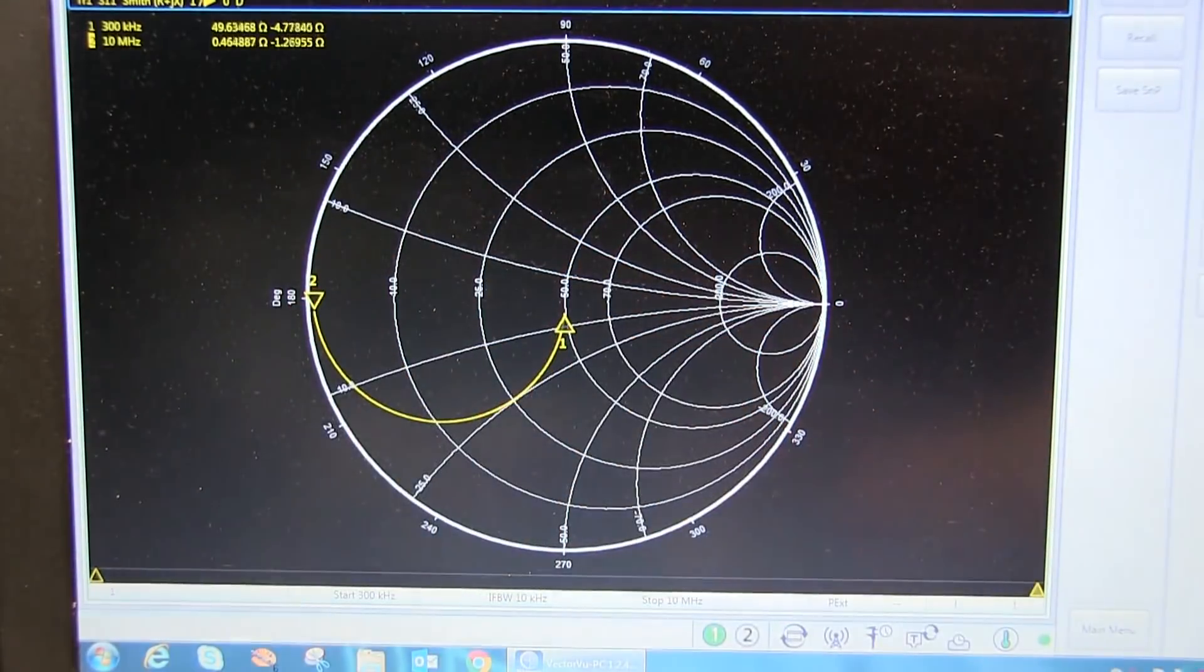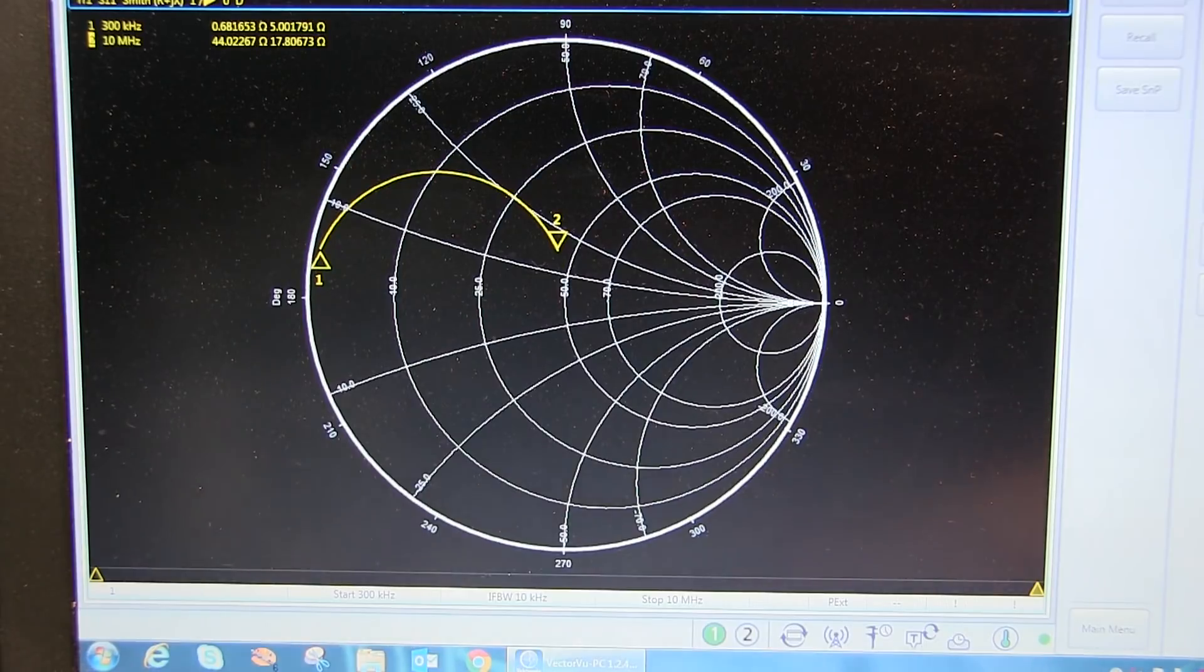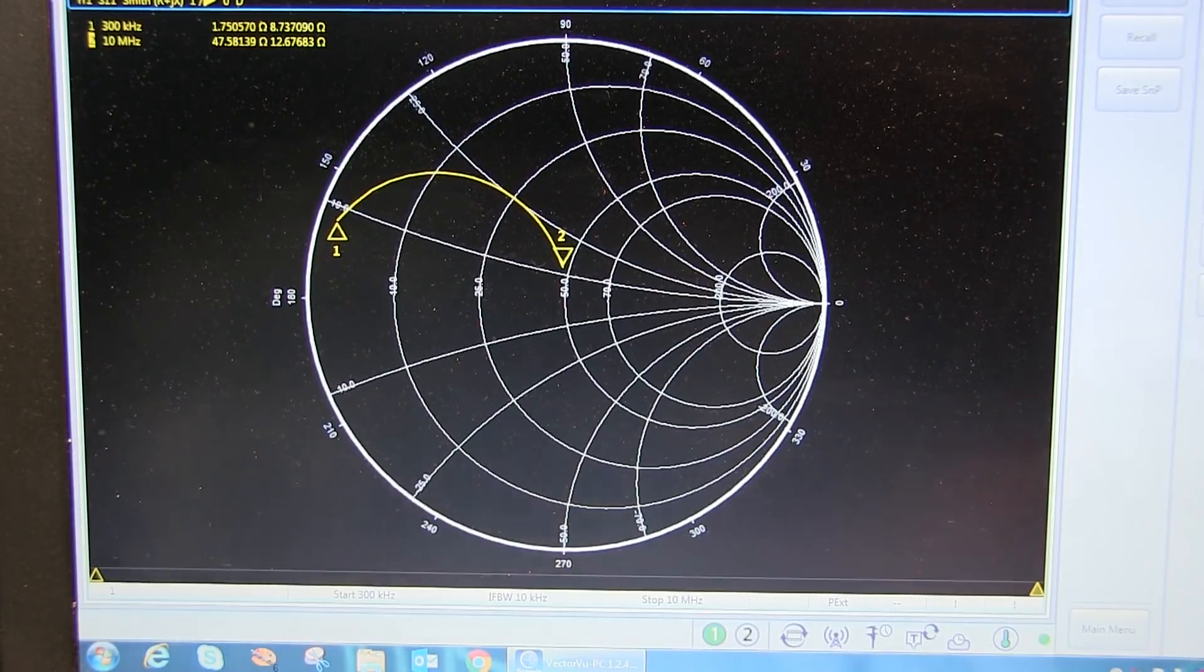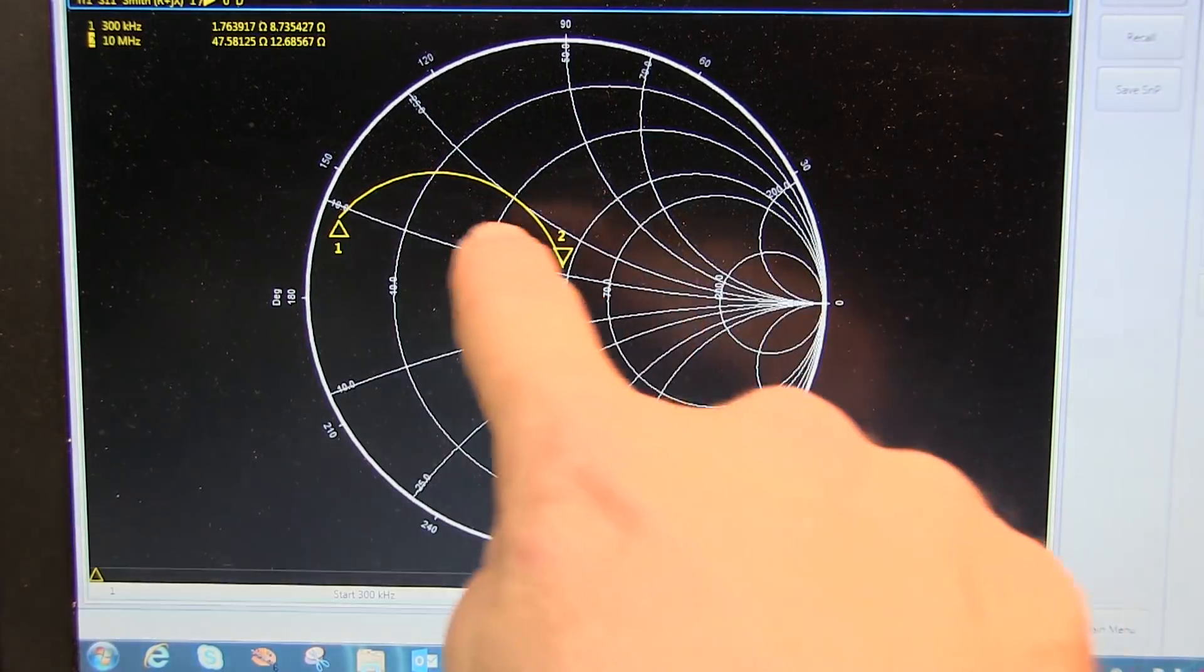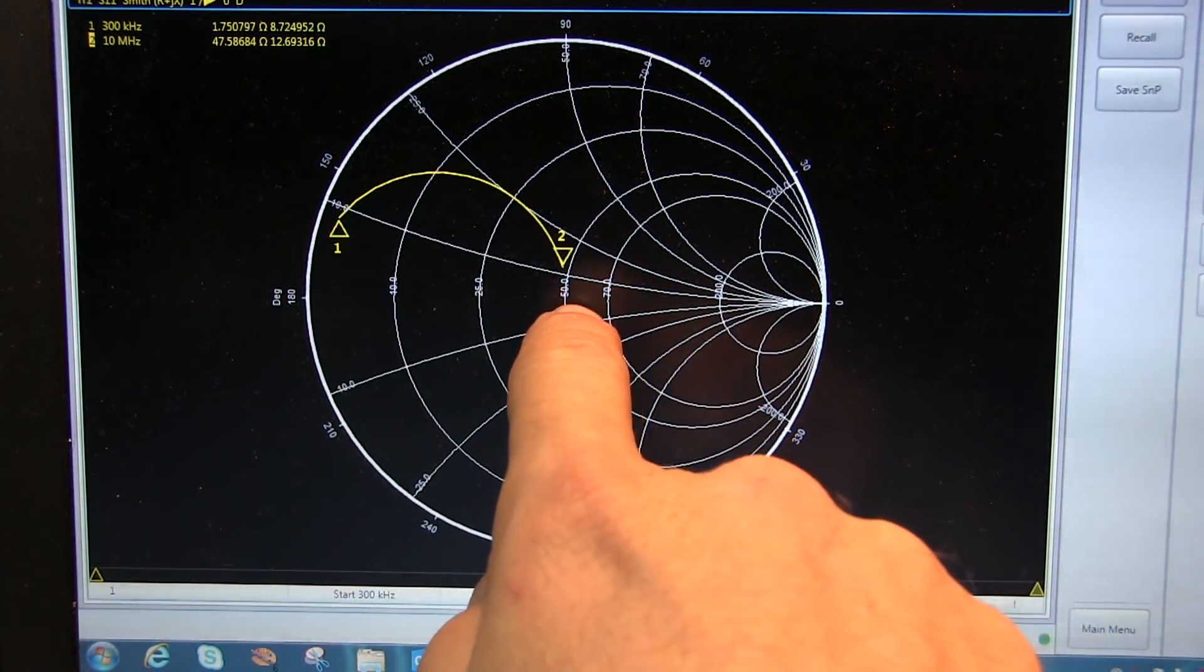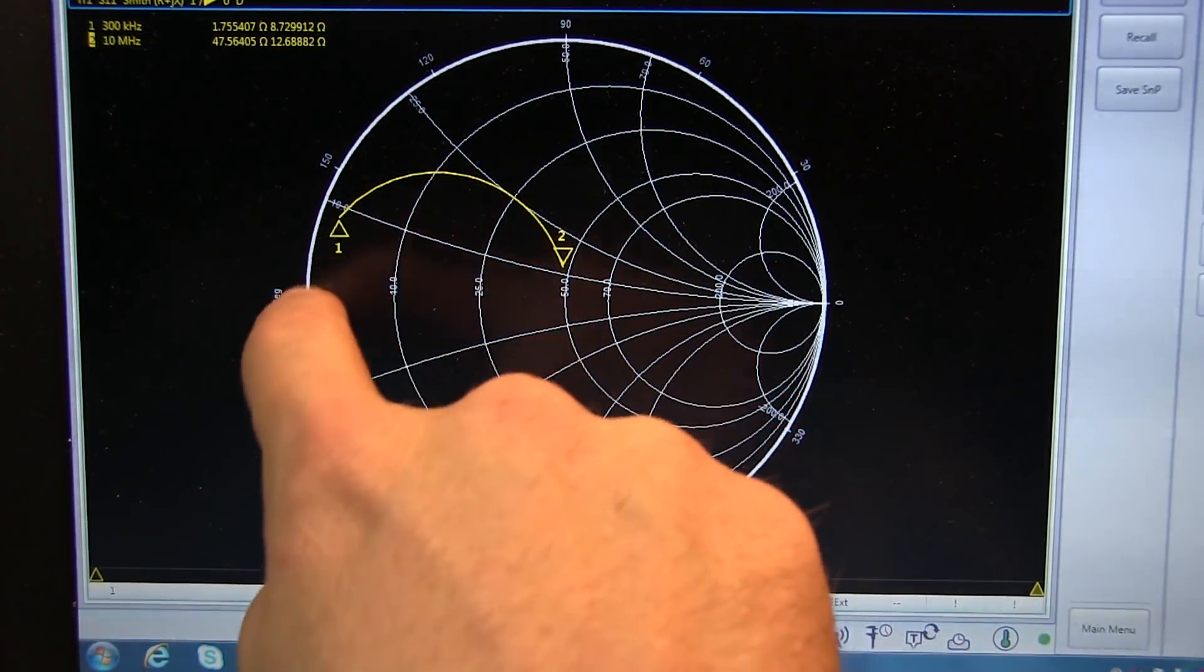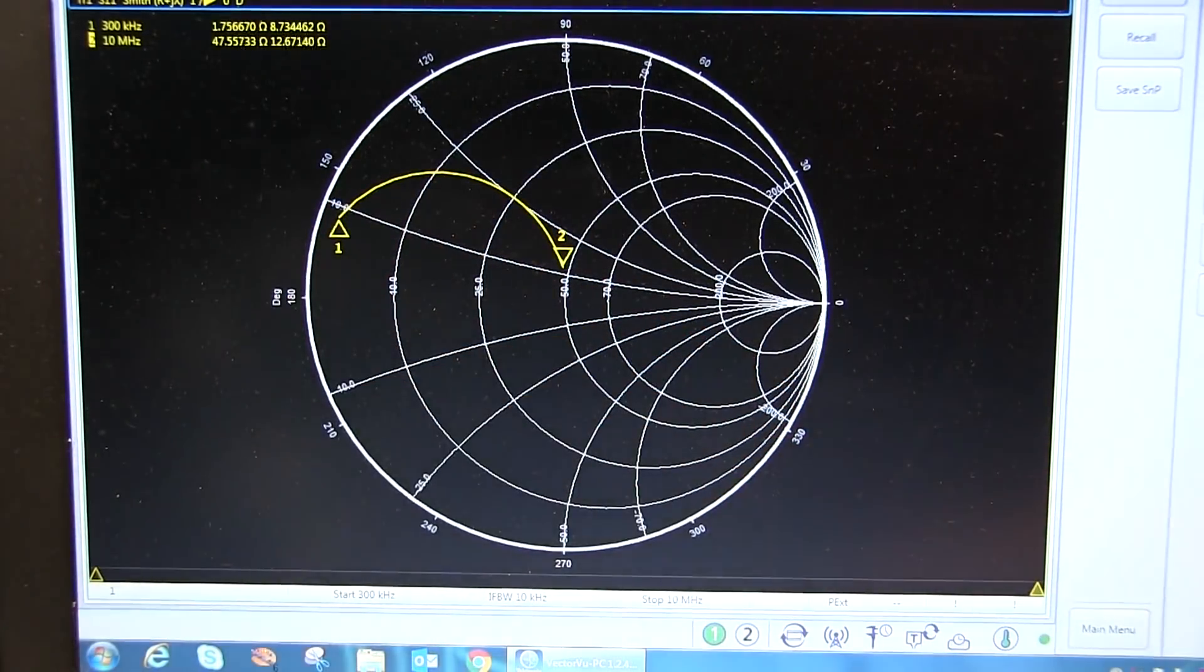Now similarly, we'll switch in a shunt inductor. And as we bring the inductance value higher and higher, that inductive reactance that's shunting the load is getting higher and higher, and therefore becoming less and less a part of the circuit, and we start approaching our system impedance. At low frequencies, the inductor looks more like a short circuit, so we're kind of approaching our short circuit over there.